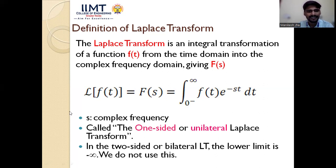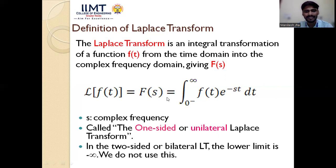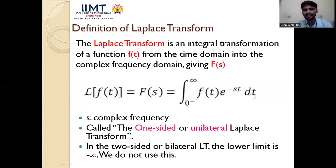When we write L{f(t)}, this means the Laplace of function f(t) in the time domain. Taking the Laplace transform gives F(s) in the complex frequency domain. We find it by integration — the formula is the integral of f(t) multiplied by e^(−st) with respect to t.